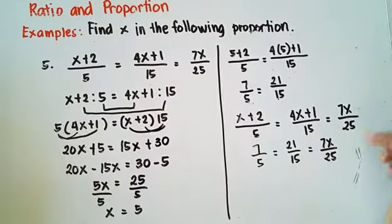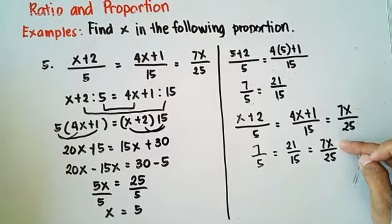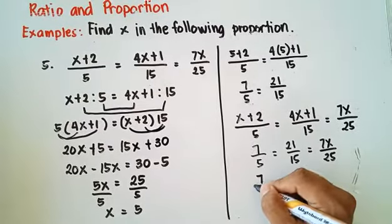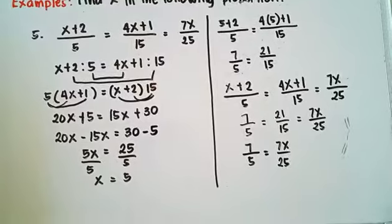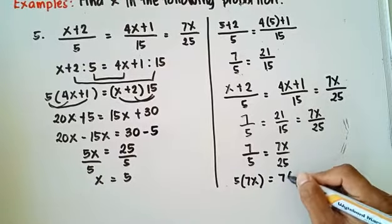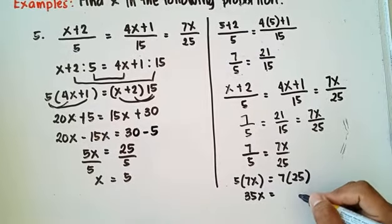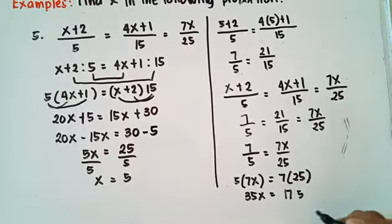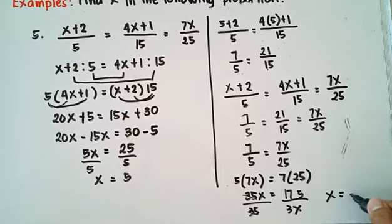Solving for x in the third ratio to confirm: 7 over 5 is equal to 7x over 25. So 5 times 7x equals 7 times 25. That is 35x equals 175. Divide both sides by 35 — x equals 5.